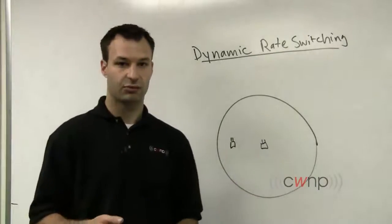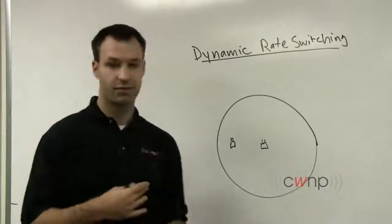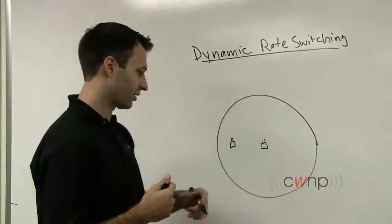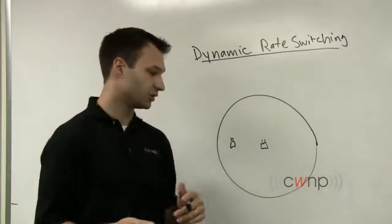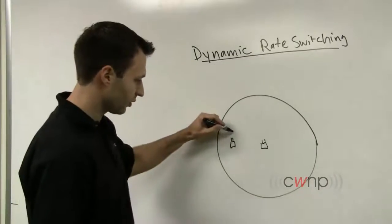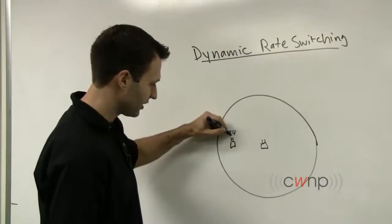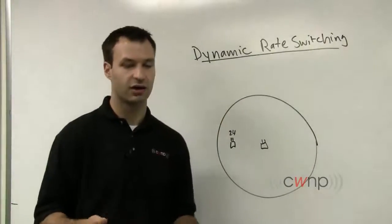Maybe it connects at 24 megabits per second based on its algorithm that determines, based on signal quality and some of these factors, what data rate it should use. So it starts here at 24 megabits per second. Let's call this, for simplicity, an 802.11a OFDM station.